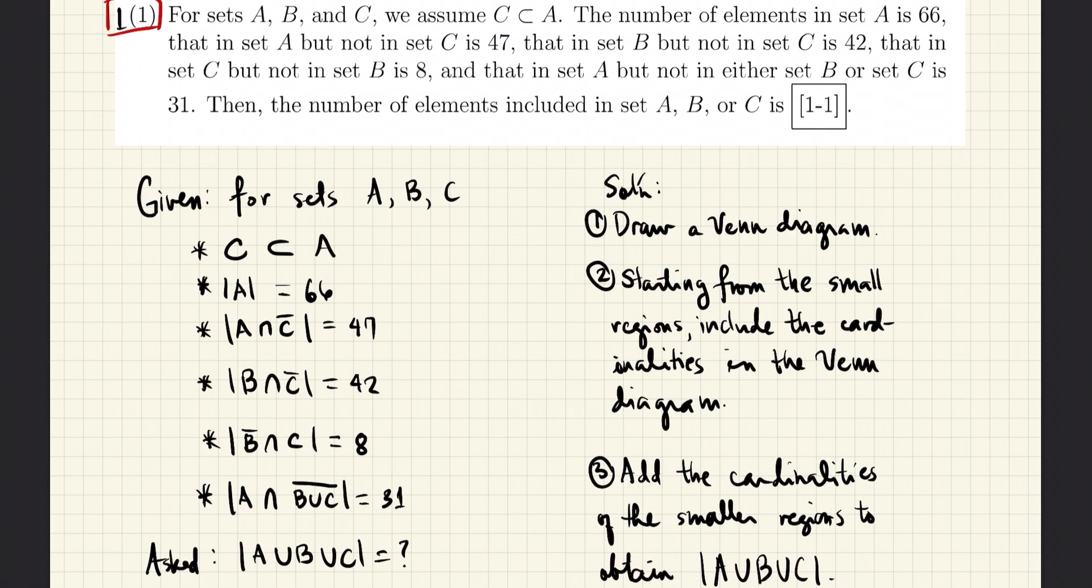For this next phrase, that is, the intersection of B and the complement of C is 42. And for the next phrase, that is, the complement of B and C. The intersection of which will have 8 elements.